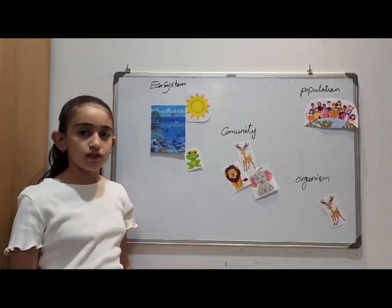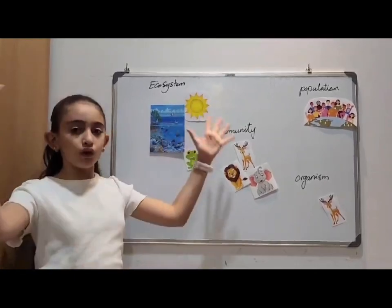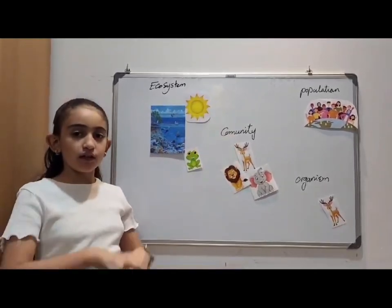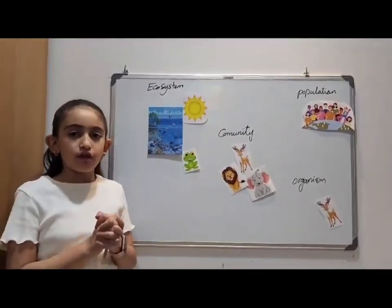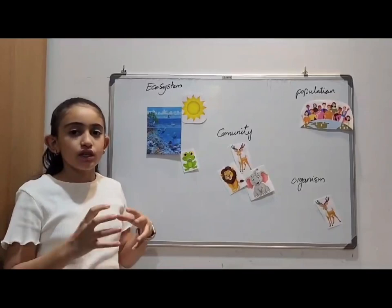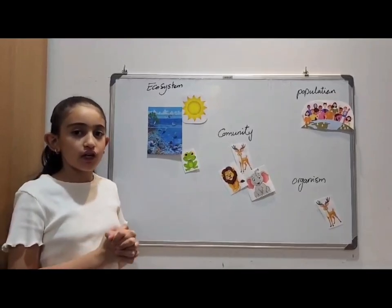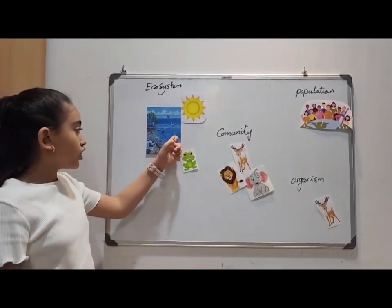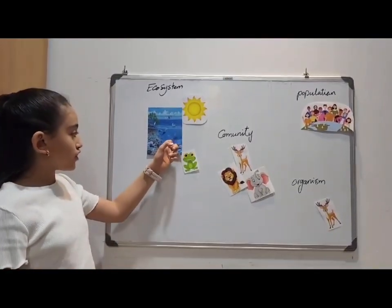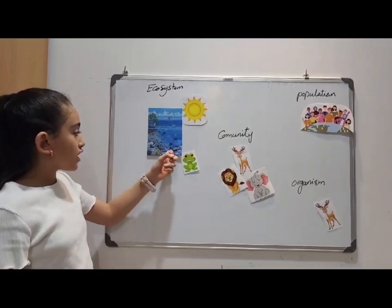An ecosystem includes all living things and non-living things and their interactions. Living things include turtle, fish, sharks, and trees.